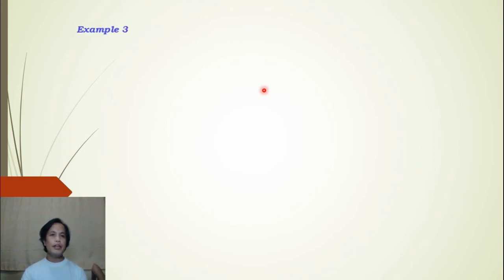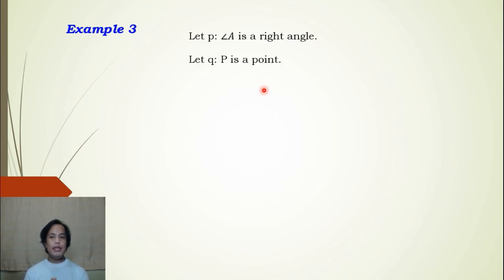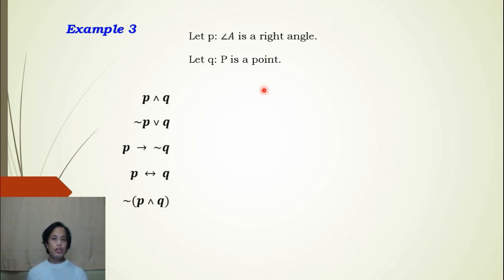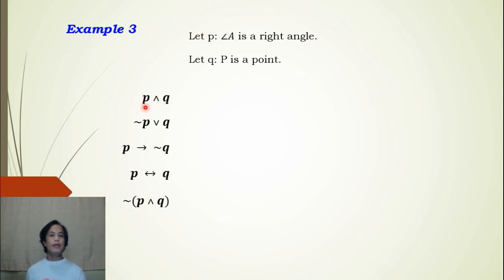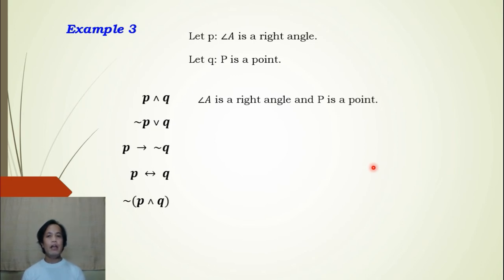Let us proceed to example three. We let p: angle A is a right angle, and q: P is a point. We are told to write the compound proposition using the given symbolic forms. For p ∧ q, this is a conjunction, so we connect the two simple propositions using 'and': Angle A is a right angle and P is a point.